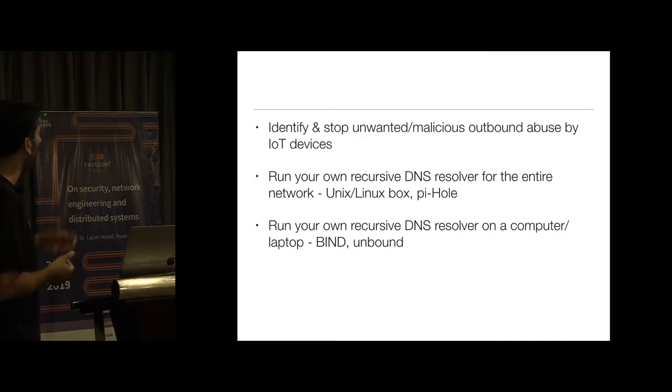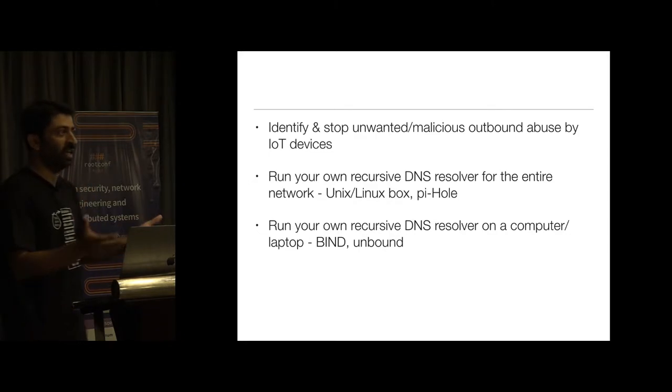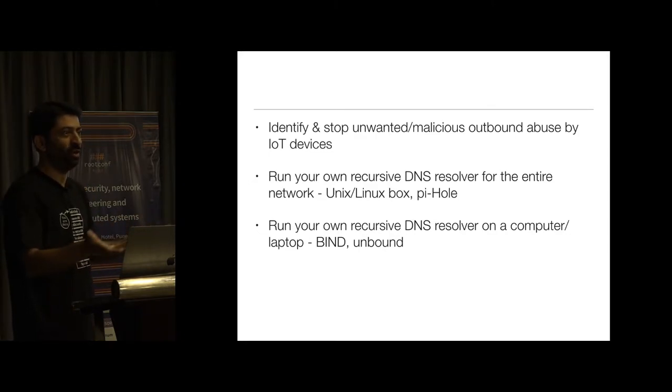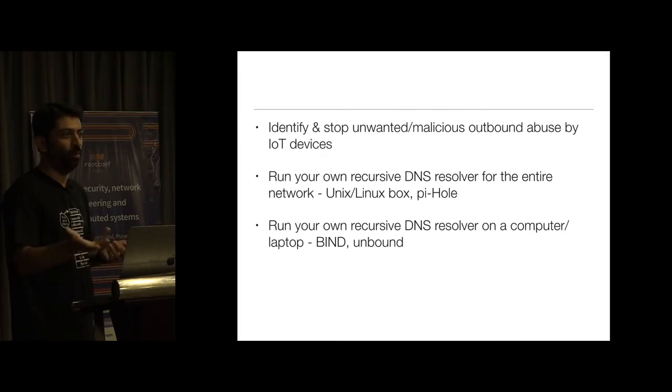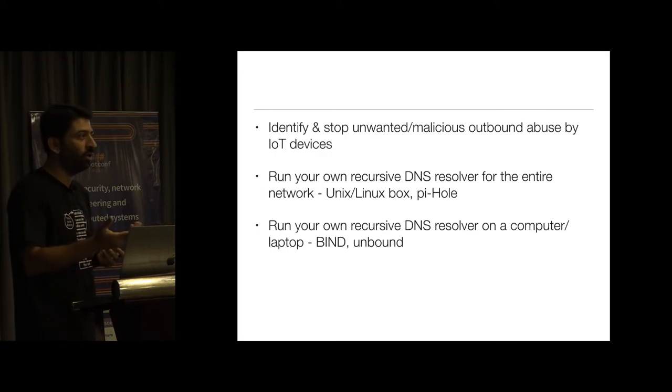One key takeaway: even if you are running just a home network, run a recursive DNS resolver on your laptop with response policy zones — that adds a lot of value in stopping malware or phishing links at the DNS level. You can do this on Linux or Unix by putting BIND, PowerDNS, or Unbound.